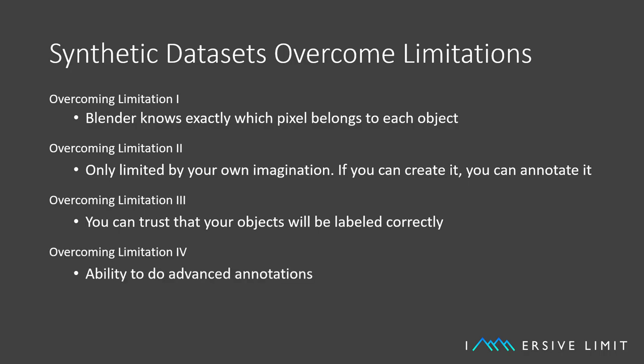Limitation number three was trustworthiness. If you generate the dataset, you know exactly what's in it — there won't be any bagels labeled as donuts or concrete labeled as gravel. Limitation number four was lack of advanced annotations. With 3D rendering software, you can create any annotations you need automatically. The renderer knows the depth and orientation of an object, so you can get precise annotations that might not even be possible with real photos.